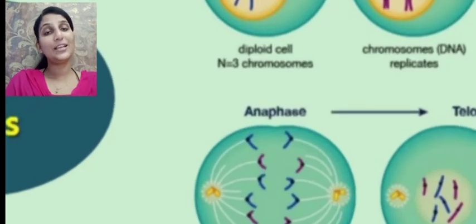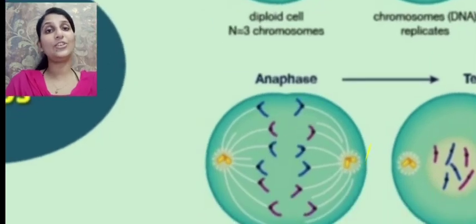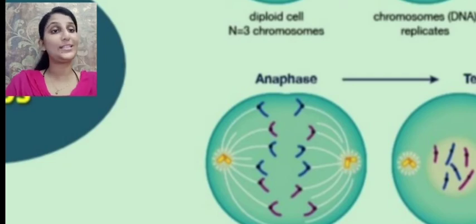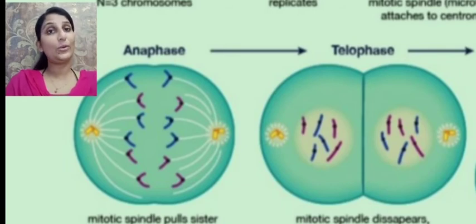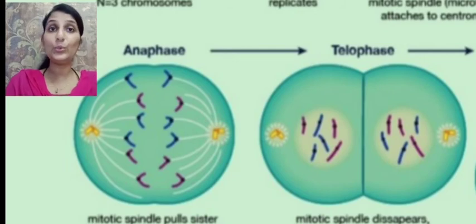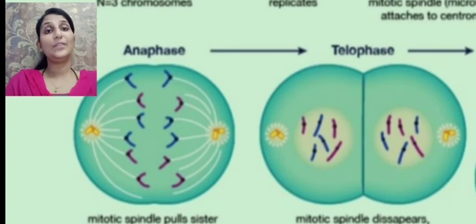It is followed by anaphase, which is the shortest phase, in which the spindle fibers contract resulting in the splitting of the sister chromatids, and the sister chromatids move towards the opposite poles. This is followed by telophase, in which the mitotic spindle completely disappears and the nuclear envelope, Golgi apparatus, endoplasmic reticulum and nucleolus all reappear, resulting in the formation of two daughter nuclei containing chromatin fibers, not chromosomes.